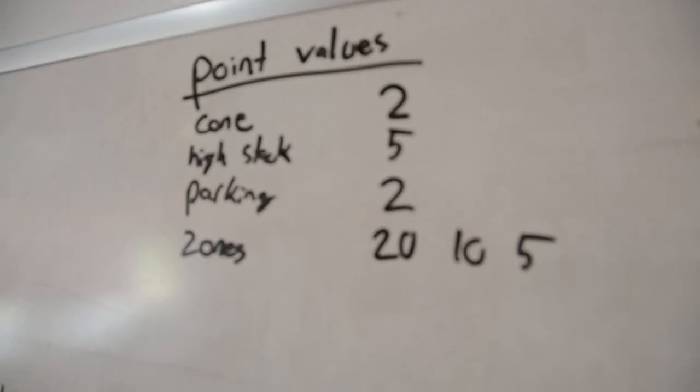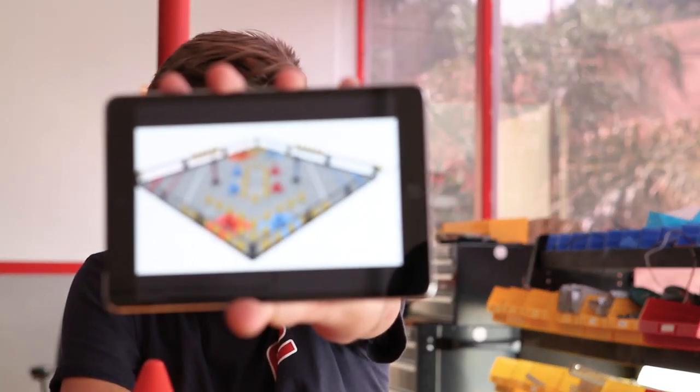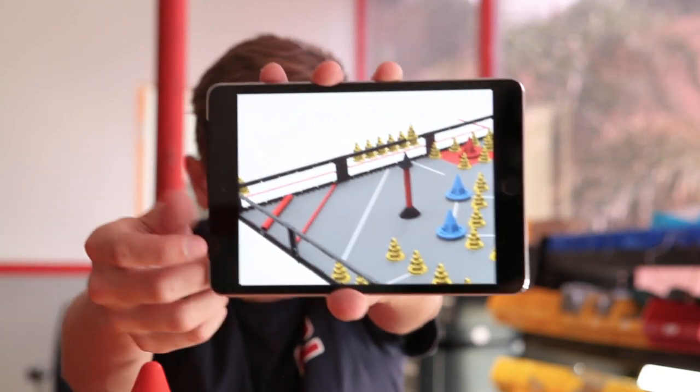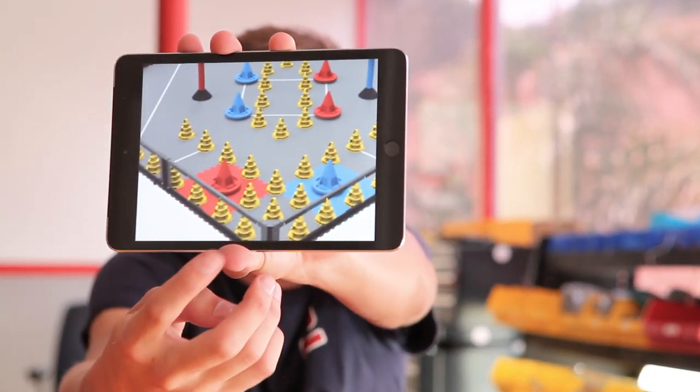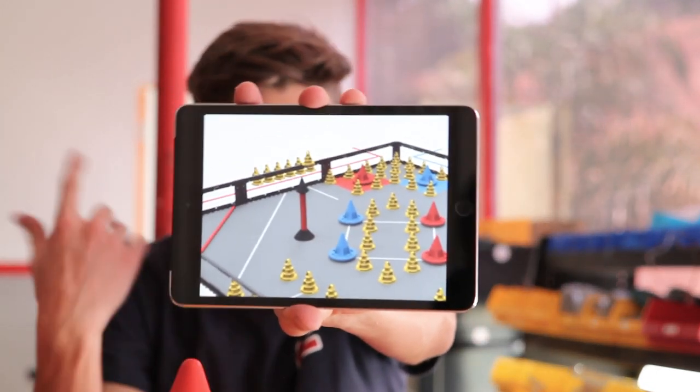First thing we looked at was point values. A couple things: the 10-20 point zones are absolutely necessary. You have to put the moveable base in. Second, these parking bonuses - two points - useless, don't even worry about them. And these non-movable goals, you can put them on but they're not the craziest most important.